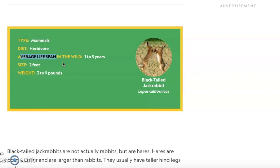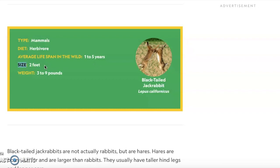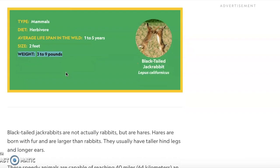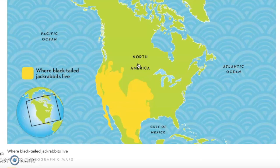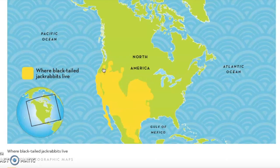Below the green box you'll find the average life span — for the jackrabbit it's one to five years. Very importantly, you have the size — for the jackrabbit it's two feet long, which is what you'll use for the size section of your research. There's also the weight (three to nine pounds), which is interesting but not required. Further down, you can see where the animal lives — for the jackrabbit it's North America. You don't need to be more specific than that; staying general is perfectly fine for the habitat section.